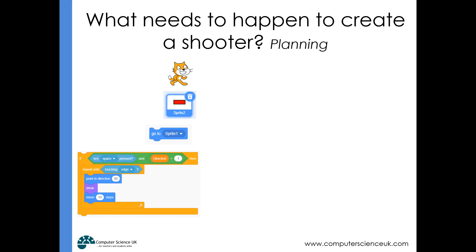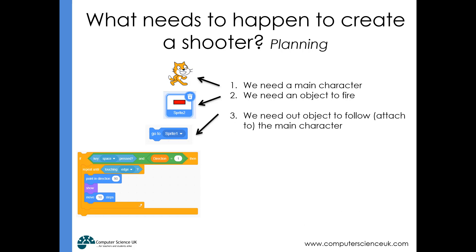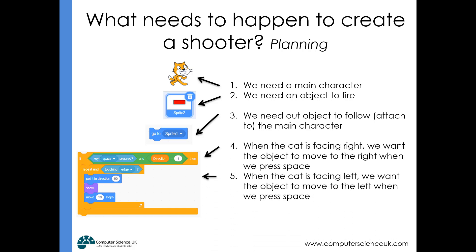Let's think about what we need in order to create a shooter in our game. We first of all need a character, we also need a bullet that we're going to fire. The bullet is going to be attached to the main character at all times and hidden, but only when we press a fire button — for example, the spacebar — do we want the bullet to show and move in the direction the character is facing, animating across the screen until it touches the edge.